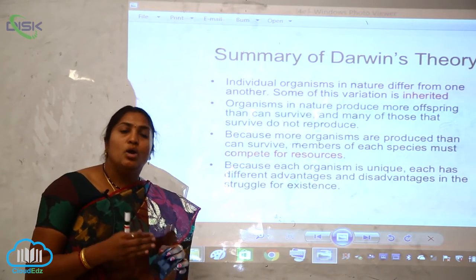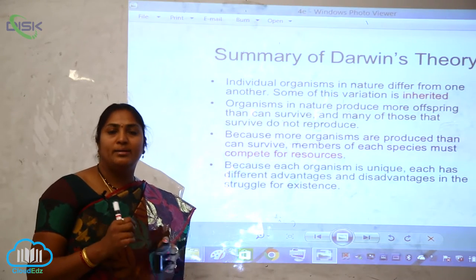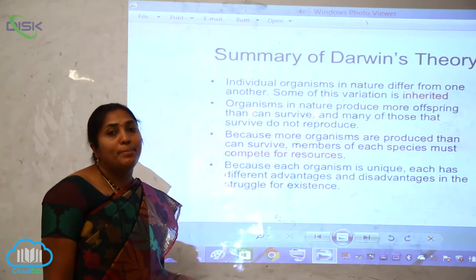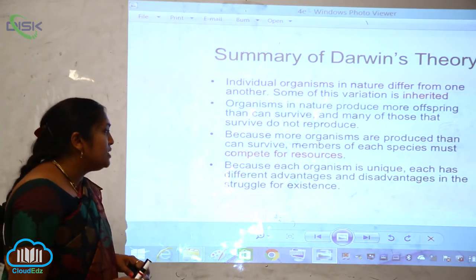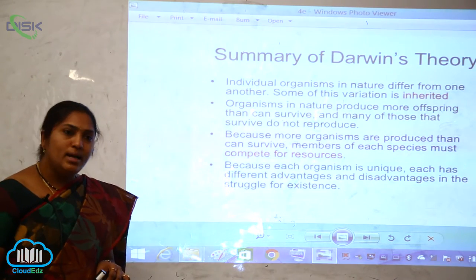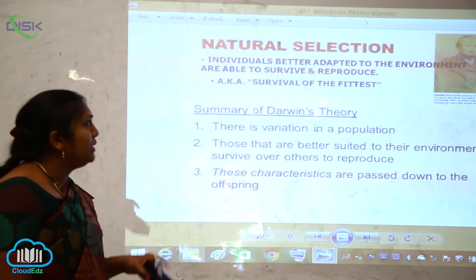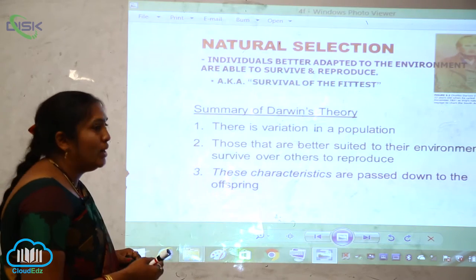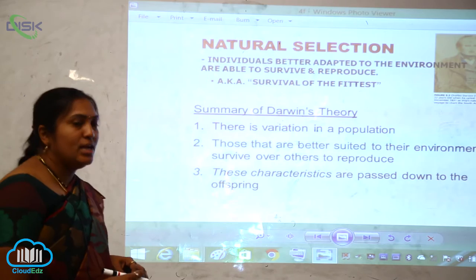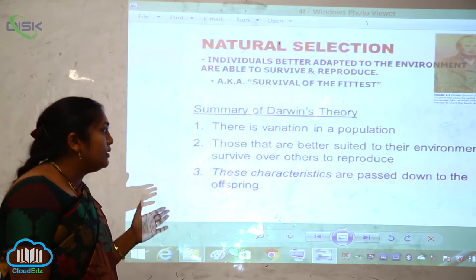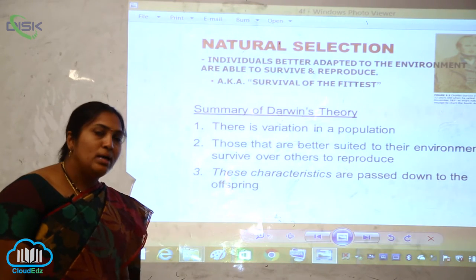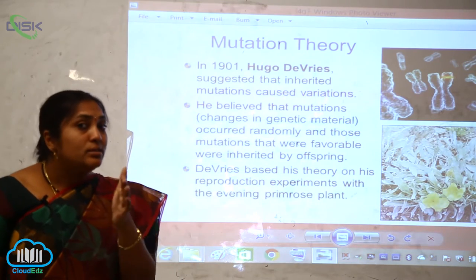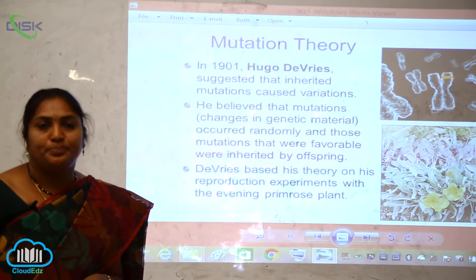For example, if one resource must be shared by hundreds of organisms, they must compete. Each organism is unique and has different advantages and disadvantages in the struggle for existence. Individuals better adapted to the environment survive and reproduce, passing their characteristics to the next generation.